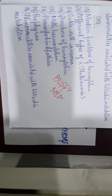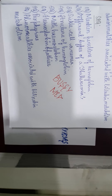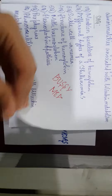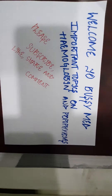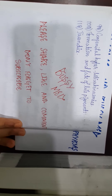Fifth short question: methemoglobin. Sixth: hemoglobinopathy. Seventh: porphyria — define porphyria and then classify them. Eighth: abnormalities associated with bilirubin metabolism. Ninth question: congenital hyperbilirubinemia.